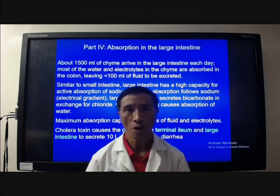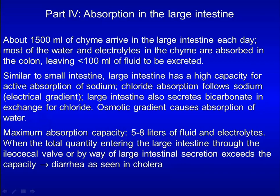Finally, we will look at absorption in the large intestine. About 1500 milliliters of chyme arrive in the large intestine each day. Most water and electrolytes in the chyme are absorbed in the colon, with less than 100 milliliters of fluid excreted. Similar to the small intestine, the large intestine has a high capacity for active absorption of sodium along with chloride. The maximum absorption capacity is about 5 to 8 liters. When the total quantity entering the large intestine exceeds this capacity, it leads to diarrhea, as seen in cholera.